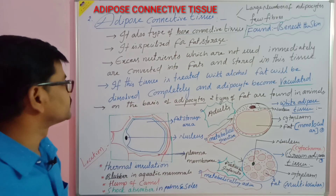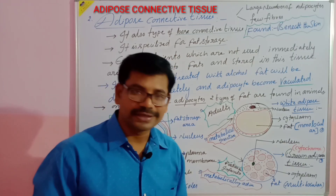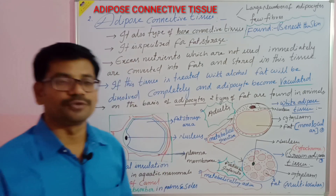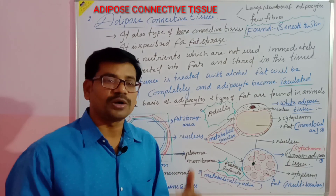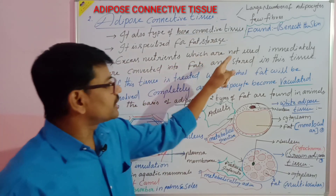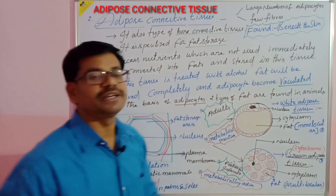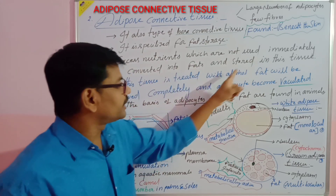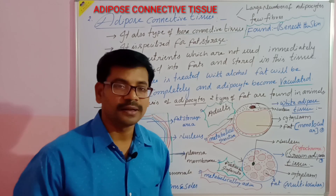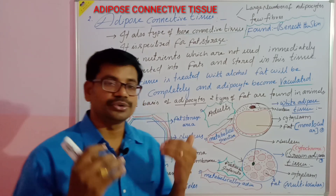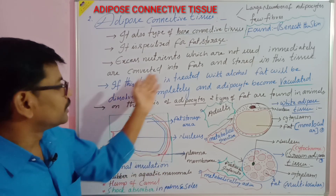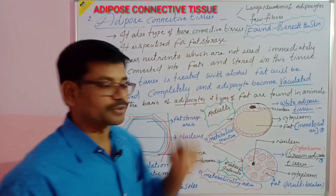This tissue is mostly used for fat storage. Generally, whenever we take food, the food is not completely utilized. The excess nutrients which are not used immediately are converted into fat and stored in this tissue. Unused food material is converted to fat and stored in adipose tissue.